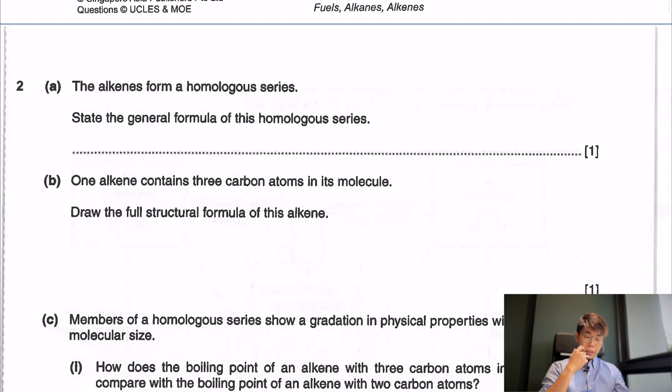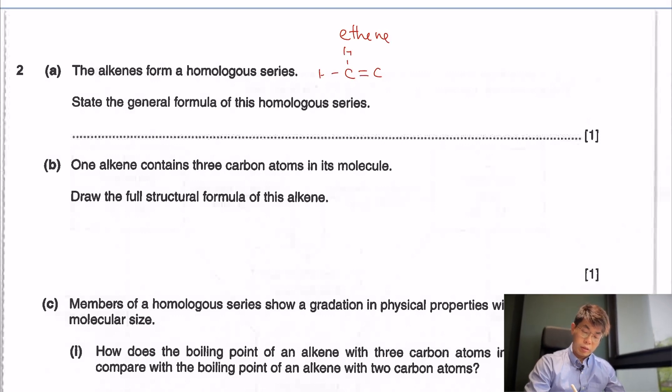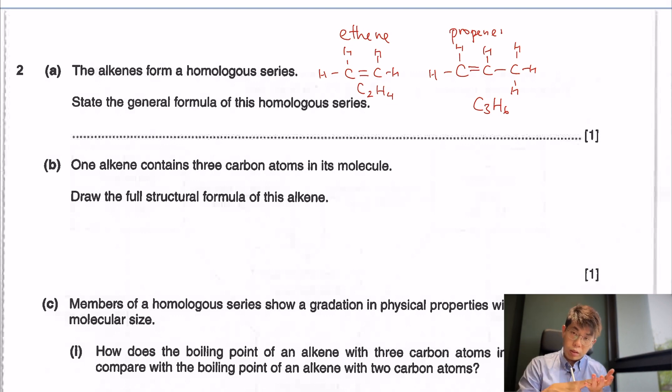Let's look at question number two. Question number two is about homologous series. The alkenes form a homologous series, state the general formula of this homologous series. I like to draw it out. So alkenes, we have our ethene. Ethene is a double bond C=C. This is C2H4. Then after that, we have our propene. Propene is C3H6. You can see that the number of carbons is always half the number of hydrogens. So therefore, the general formula of this homologous series will be CnH2n.